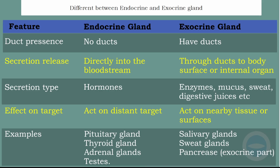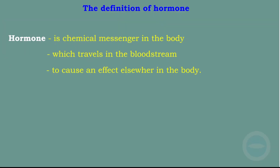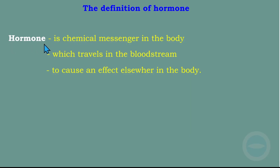Next is the definition of a hormone. A hormone is a chemical messenger in the body which travels in the bloodstream to cause an effect elsewhere in the body. Remember, endocrine glands secrete hormones, and these hormones are messengers that deliver a message to a particular organ.